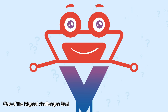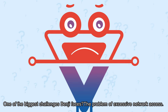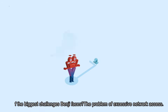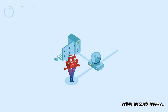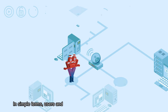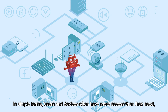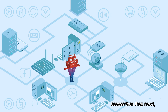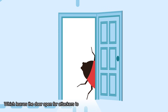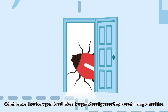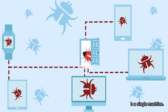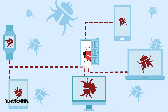One of the biggest challenges Benji faces? The problem of excessive network access. In simple terms, users and devices often have more access than they need, which leaves the door open for attackers to spread easily once they breach a single machine.